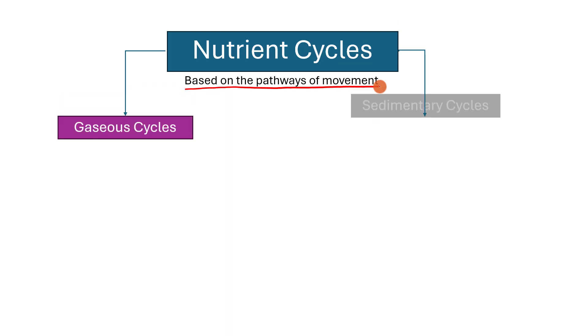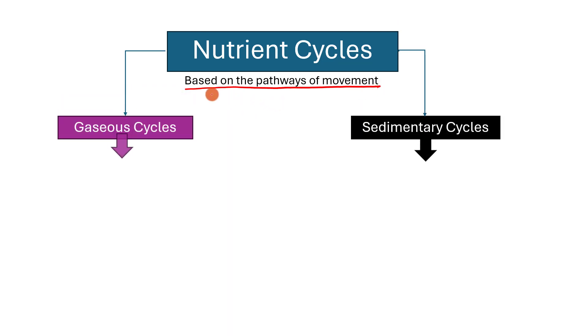Gaseous cycles involve the movement of nutrients primarily through the atmosphere in gaseous forms. Nutrients are taken up by organisms, released back into the atmosphere through various processes, and then may be taken up again by other organisms. Carbon cycle, nitrogen cycle, etc.